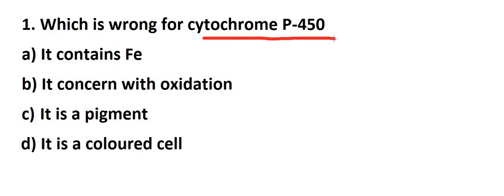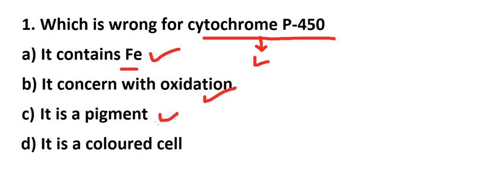Next question: which statement is wrong for cytochrome P450? Cytochrome P450 is found mainly in the liver. It is a group of enzymes that helps to make toxic compounds, like anti-cancerous drugs, less toxic and easier to excrete from the body. It is an iron-containing pigment. One option states it is a colored cell - that is wrong, it is not a cell. So the wrong statement is the correct answer here.